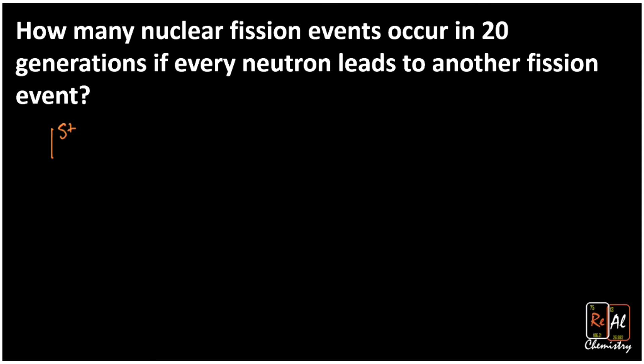In your first generation, you have one fission event. Remember, you sent in one neutron and three came out, so you've made a total of two more neutrons than you started with. Those two neutrons can go out and hit another set of uranium atoms. If that happens, in the second generation you'll get two fission events.